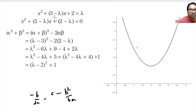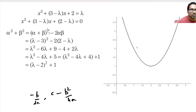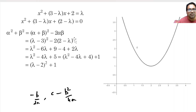What is the sum of the roots? Sum of the roots is minus b by a, that is minus of (3 minus λ), which is λ minus 3. Product of the roots is c by a, that is 2 minus λ. We want α squared plus β squared to be minimum. We can write α squared plus β squared as (α plus β) whole squared minus 2αβ. What is α plus β? Alpha plus beta is λ minus 3.